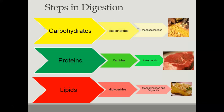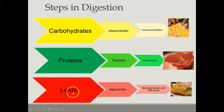As you can see here, carbohydrates break down to disaccharides and then further to monosaccharides. Proteins break down to peptides and amino acids. And lipids break down to diglycerides and then monoglycerides and fatty acids.